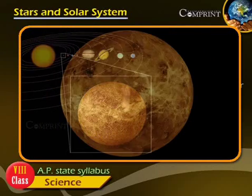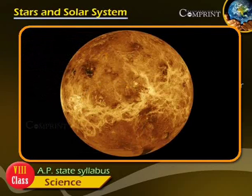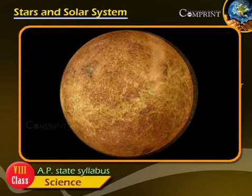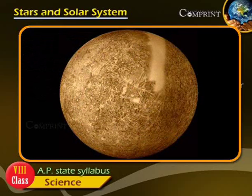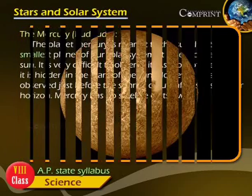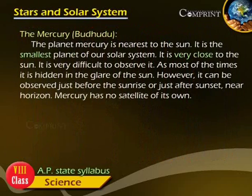Most of the time, it is hidden in the glare of the Sun. However, it can be observed just before sunrise or just after sunset near the horizon. Mercury has no satellites of its own.